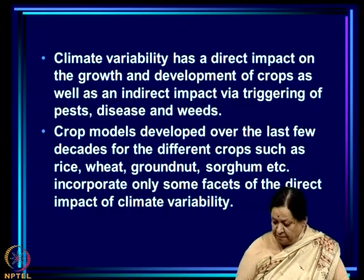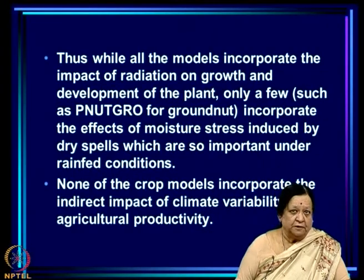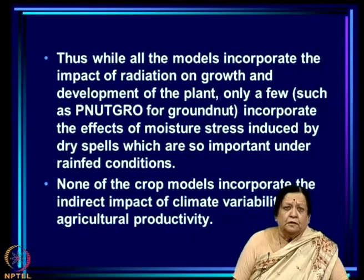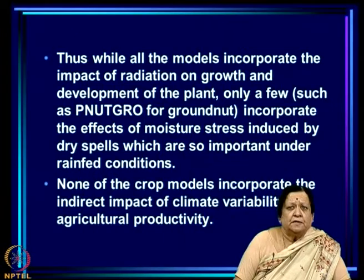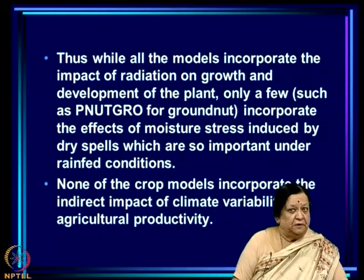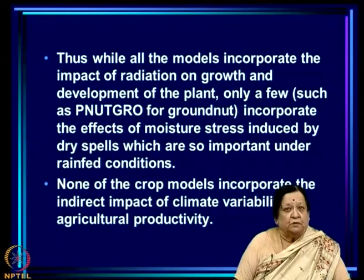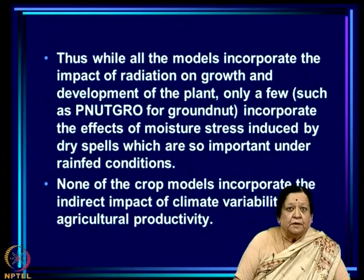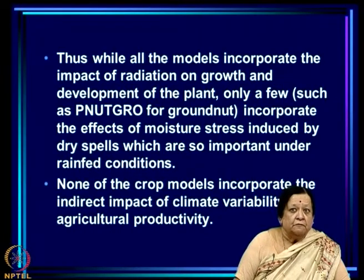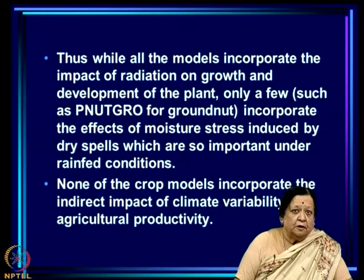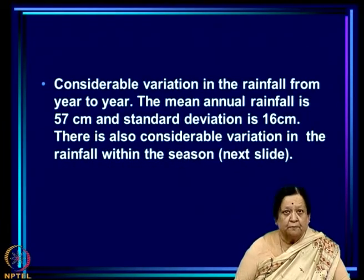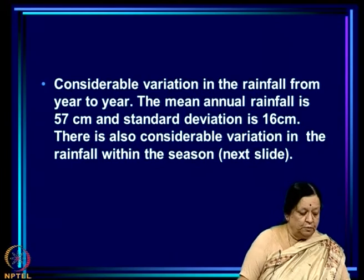The direct impact refers to the impact on growth and development of the crop. While all models incorporate the impact of radiation on growth and development of the plant, only a few, such as the PeanutGrow model which we looked at in the last class, incorporate the effects of moisture stress induced by dry spells, which are so important under rain-fed conditions. None of the crop models incorporate the indirect impact of climate variability on agricultural productivity.